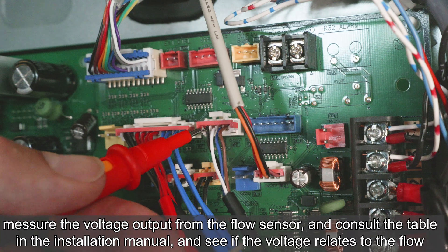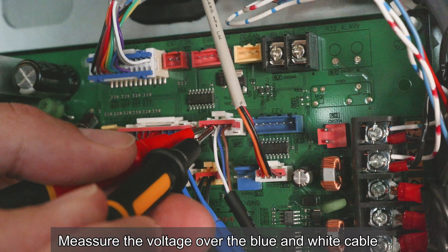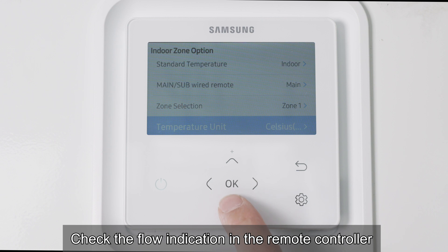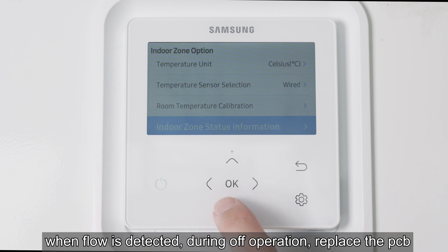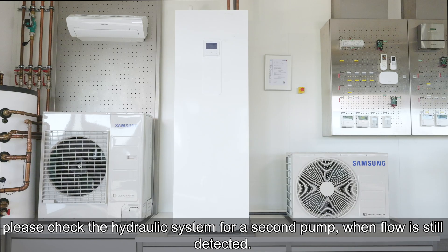Measure the voltage over the white and blue cable. Check the flow indication in the remote controller. When flow is detected during off operation, replace the PCB. Please check the hydraulic system for a second pump.